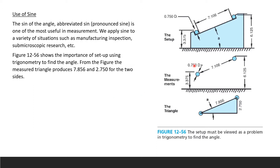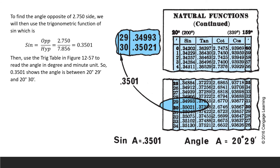From the figure, the measured triangle produces values of 7.856 and 2.750 for the two sides. We set up the parts we want to measure, take linear measurements, and get those two values. Then we approach finding the angle. The opposite side is 2.750 and the hypotenuse is 7.856. Dividing opposite by hypotenuse gives us the sine value: 0.3501.